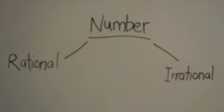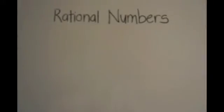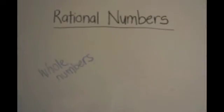There are two types of numbers: rational numbers and irrational numbers. Rational numbers are any numbers that can be expressed as a fraction. Rational numbers are whole numbers, decimals, and fractions.